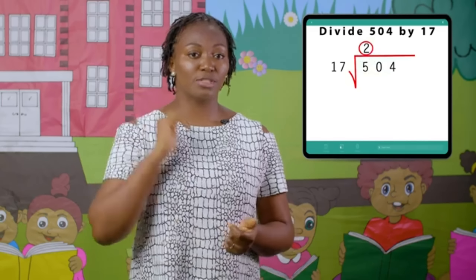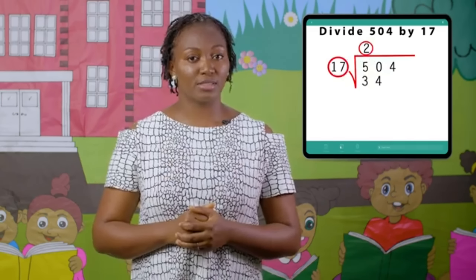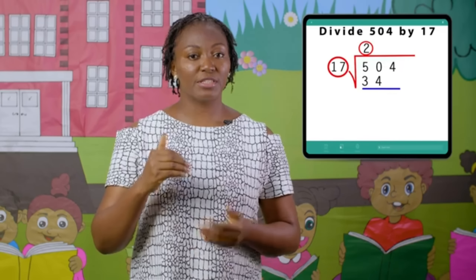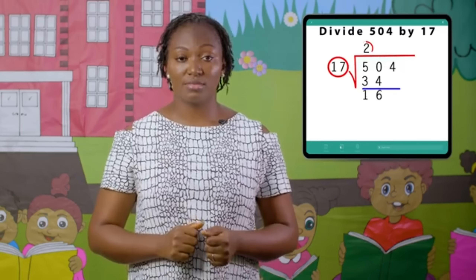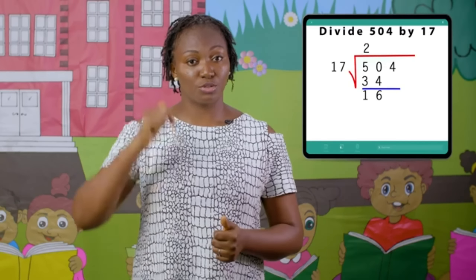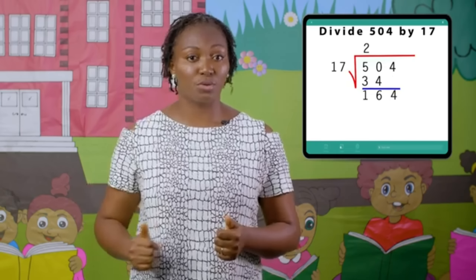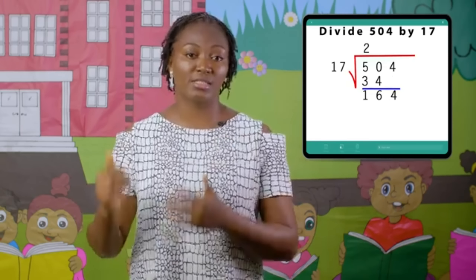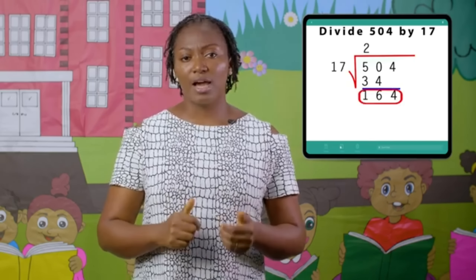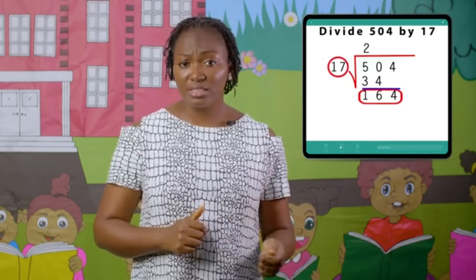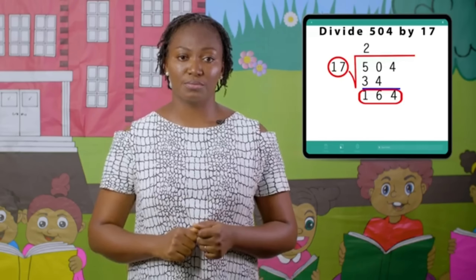Subtract: 50 minus 34 gives us 16. Now the next thing is to bring down the next digit, which is 4, and then you have 164. How many 17s can you find in 164?